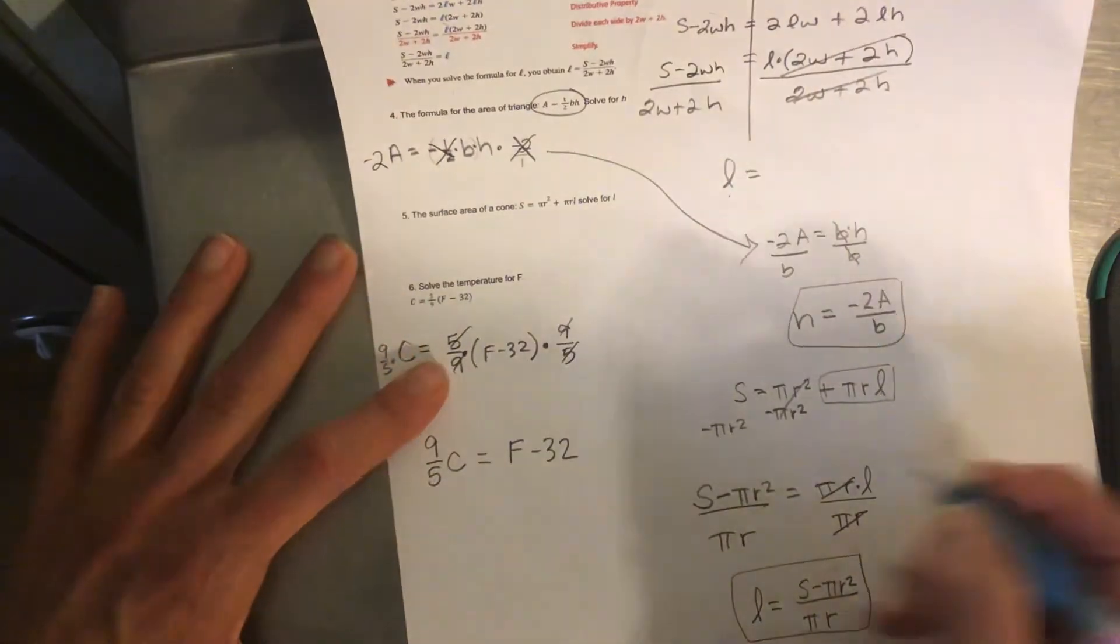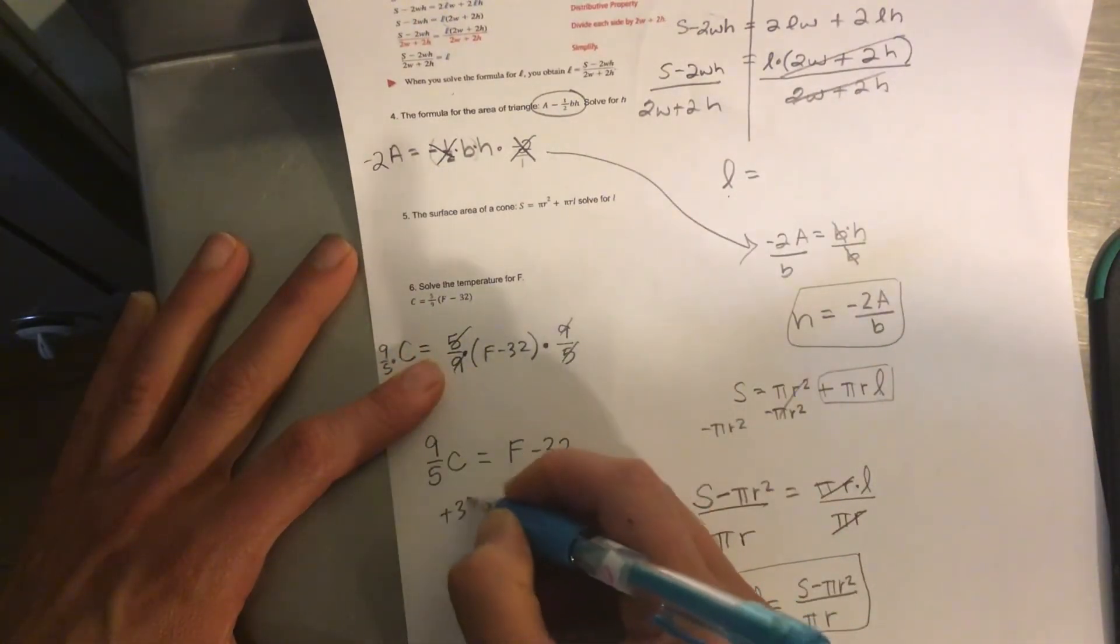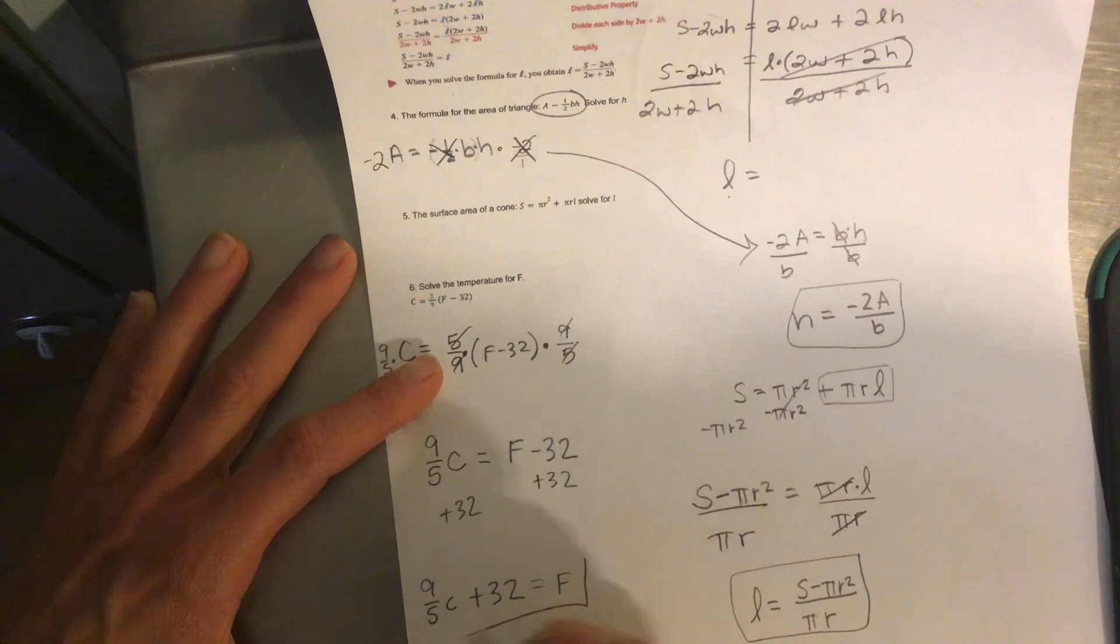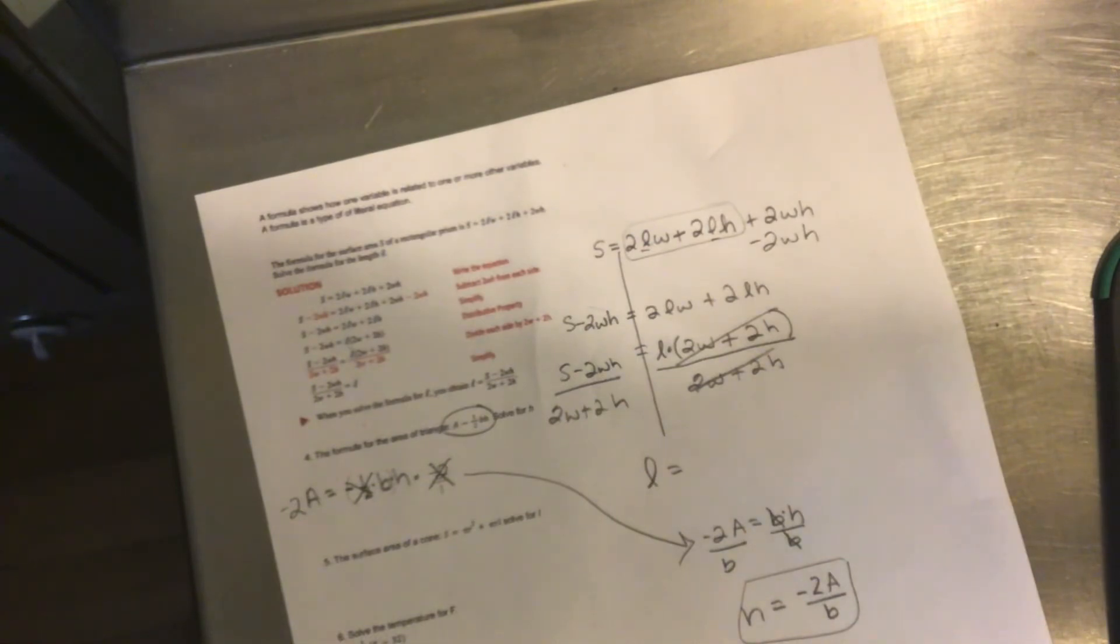Add 32. And add 32. So we've got nine fifths C plus 32. Because they're not like terms. This does not have a variable. This one does. Equals F. I can't combine them. There we go. So again, like I said, go to the HyperDoc. And I put in the IXL practice that you can do for this. And don't forget to do your homework.